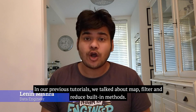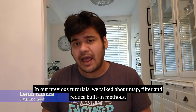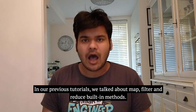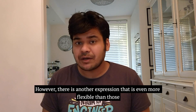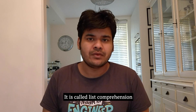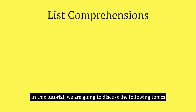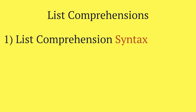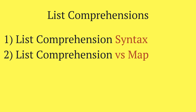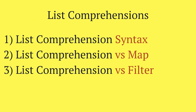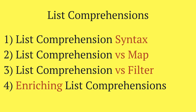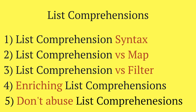In our previous tutorials, we talked about map, filter, and reduce built-in methods. However, there is another expression in Python that is even more flexible than those. It is called list comprehensions. In this tutorial, we are going to discuss the following topics: list comprehension syntax, list comprehension vs map, list comprehension vs filter, enriching list comprehensions with additional for loops, and the most important one — why you shouldn't abuse list comprehensions.